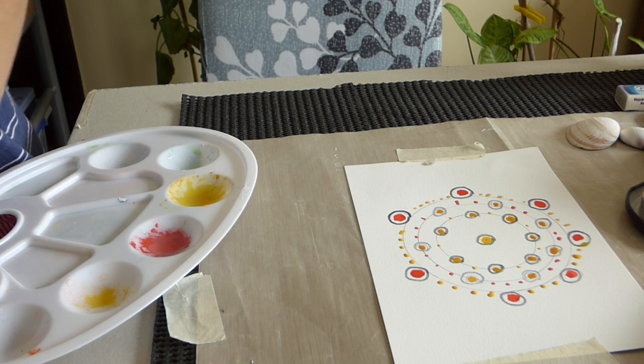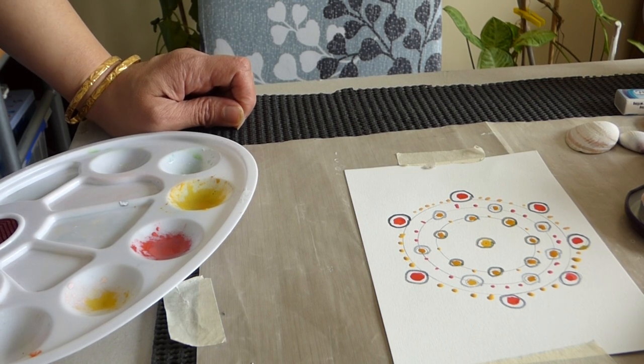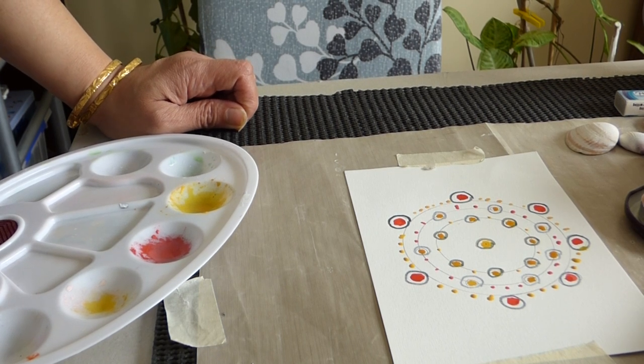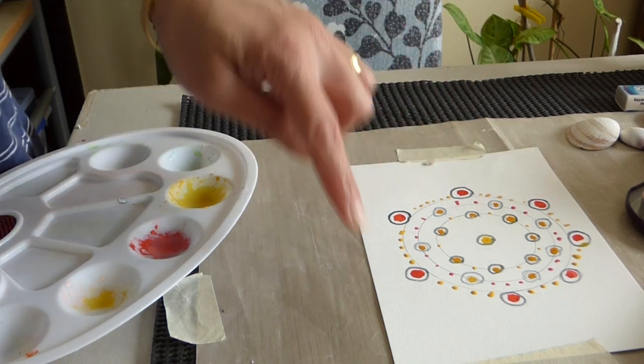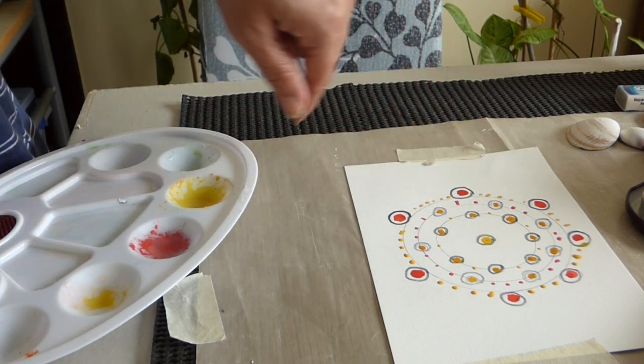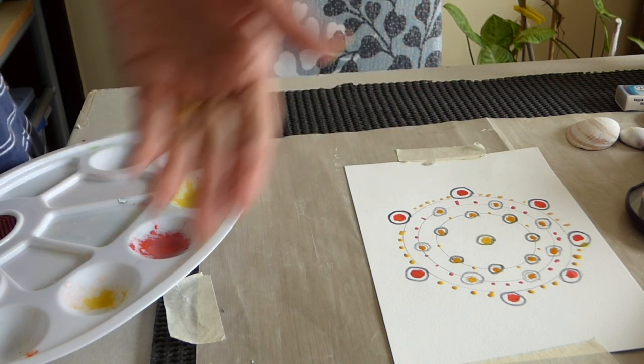With that we come to the end of drawing this dotted circle mandala. And as of now, we'll be leaving it to dry and then obviously the circle has to be recolored with either pen or with watercolor.